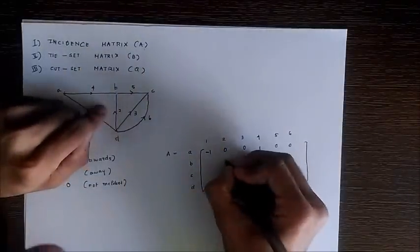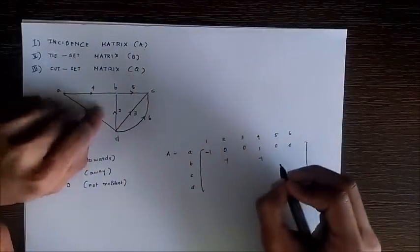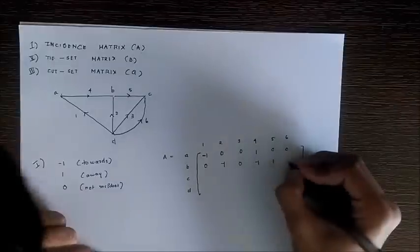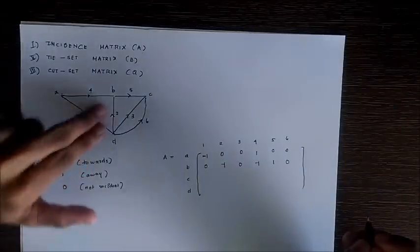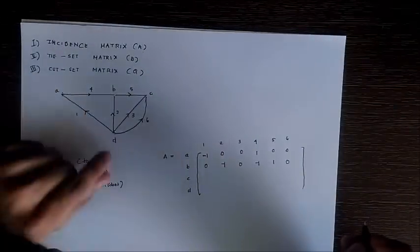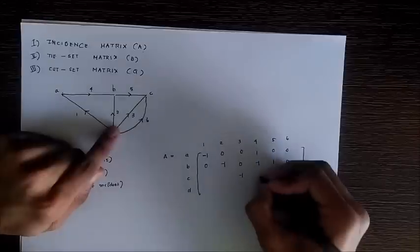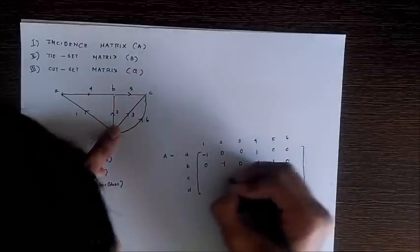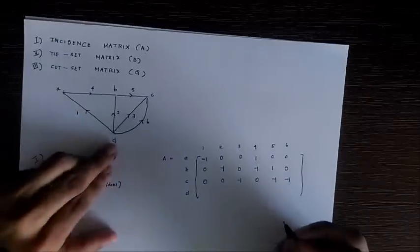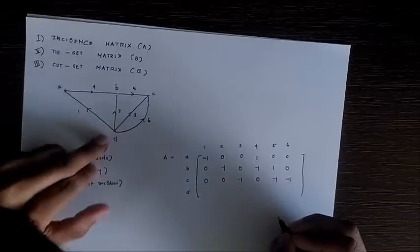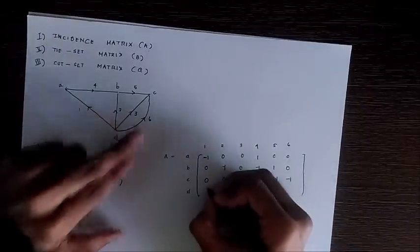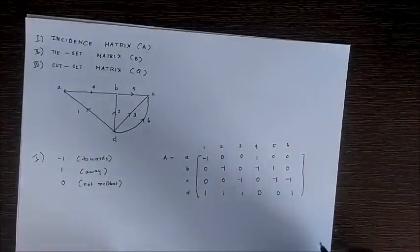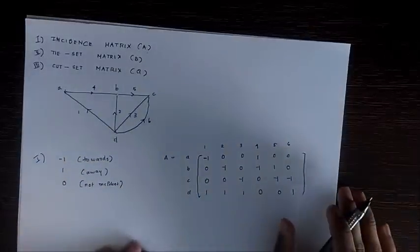All others are not incident on B so we give zero. Now for node C: branches 3, 5, and 6 are all incident towards it, so they get negative one, and all others get zero. Now for node D: branches 1, 2, 3, and 6 are all directed away from it, so they get positive one. This is the incidence matrix for this graph.